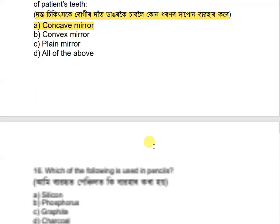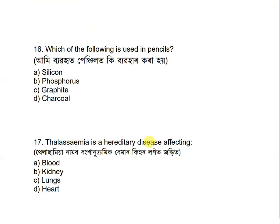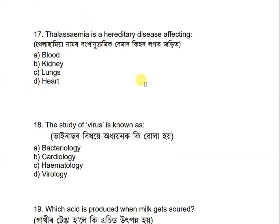Question 16: Which of the following is used in pencils? Options are: silicon, phosphorous, graphite, and charcoal. The correct answer is option C — graphite is used in pencils.